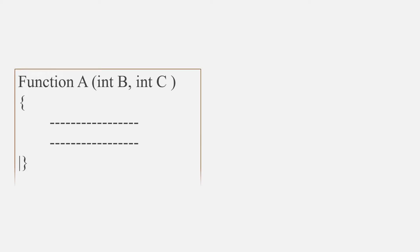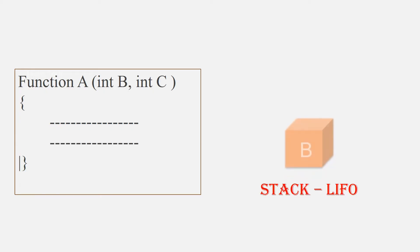There are two parameters here: Integer B and Integer C. This is a stack algorithm to implement a function parameter. In this case, Integer B is the first to be stored, and then Integer C is stored.